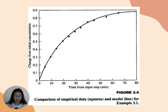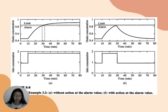Page 6 is about Figure 3.4, a comparison of empirical data (squares) and model line for Example 3.1. Next is Figure 3.5, which shows the results for Example 3.2: (a) without action at the alarm value, and (b) with action at the alarm value.